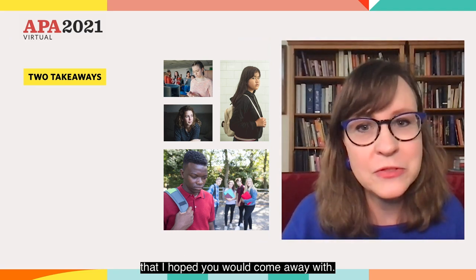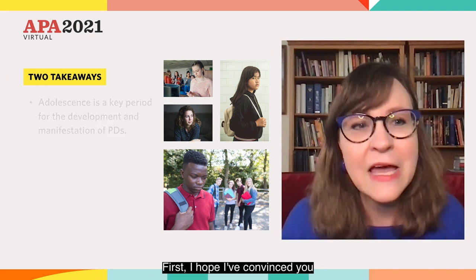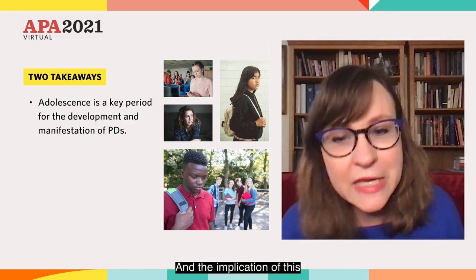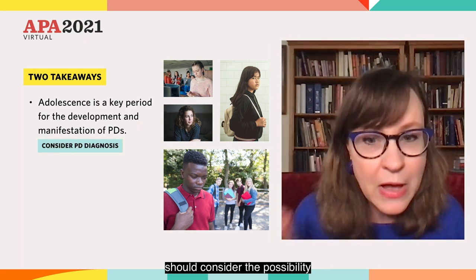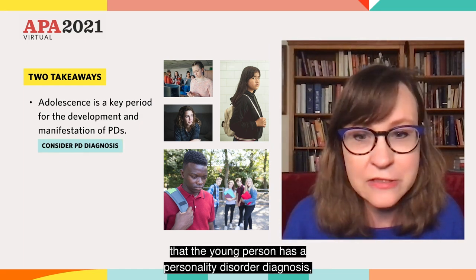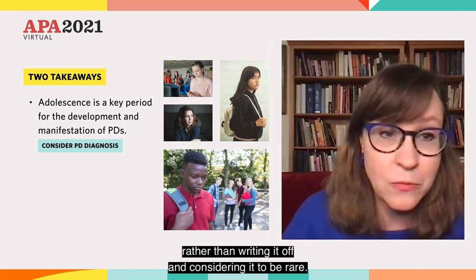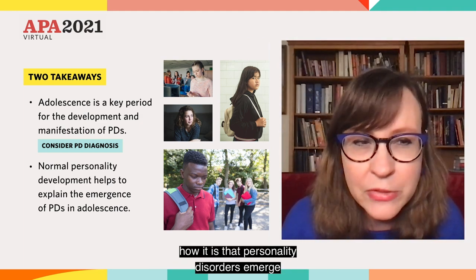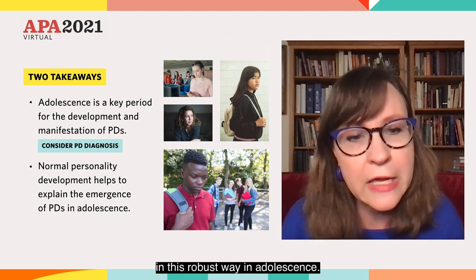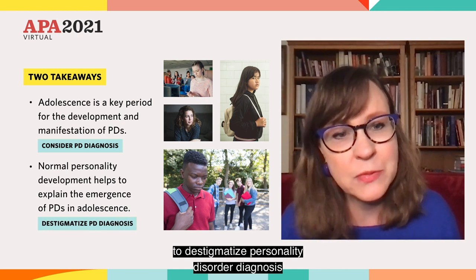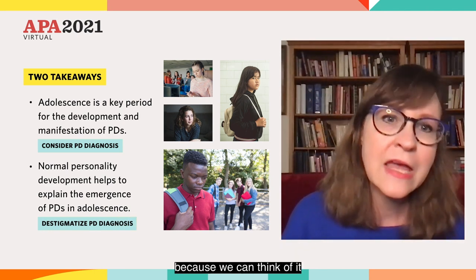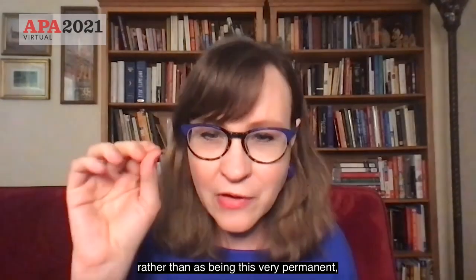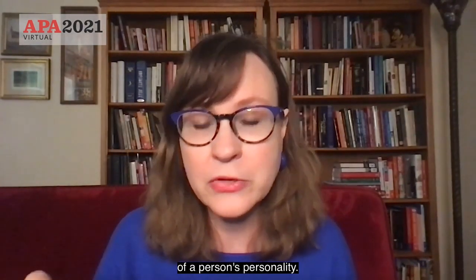So let's go back to the two takeaways. First, I hope I've convinced you that adolescence is a key period for the development and the manifestation of personality disorders. The implication is that people working with young people should consider the possibility of a personality disorder diagnosis rather than writing it off as rare. And second, I hope I've convinced you that normal personality development can really help us explain how personality disorders emerge in adolescence. I'm hoping too that this will help to destigmatize personality disorder diagnosis, because we can think of it as emerging from normal range personality processes that have gotten off track, rather than as being a very permanent, enduring, and debilitating aspect of a person's personality.